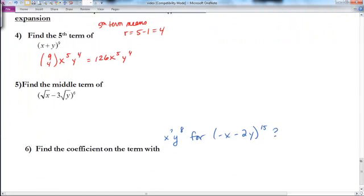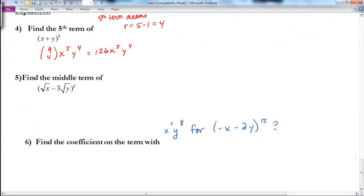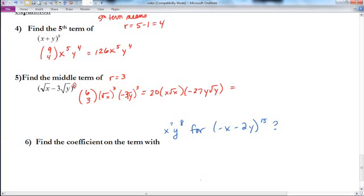If we look at example 5, we want to find the middle term for this binomial. Well, if it's raised to the 6th power, then that means that there will be 7 terms total. The middle term will have an r equal to 3, because on our first term, r is equal to 0. So, if we go ahead, we are looking at 6 choose 3, square root x to the 3rd power, and negative 3 root y to the 3rd power. And if we go ahead and multiply all of this out, we will get 20 times root x raised to the 3rd power would give us x root x. And then this guy would give us negative 27 y root y. And if we simplify that, we would get negative 540 xy root xy.